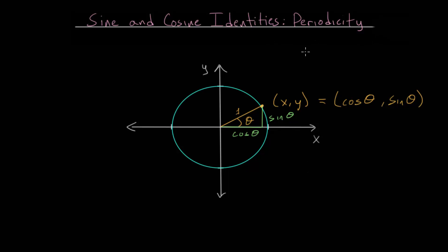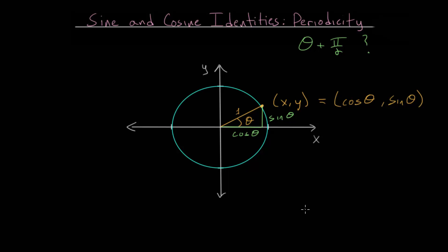We want to ask the question: what happens when we take theta and add pi over 2 to it? What happens to our trig functions? If we put in cosine of theta plus pi over 2, or sine of theta plus pi over 2, how do they relate to the original trig functions in this first quadrant?